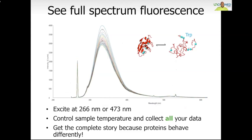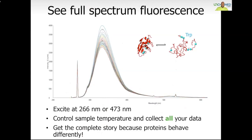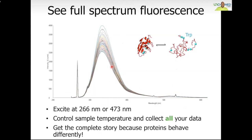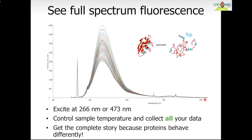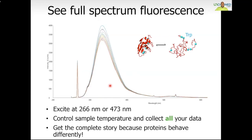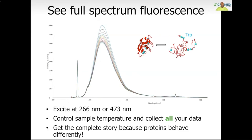Here we're viewing an overlay of the raw data, where the full collection of spectra is collected over a temperature ramp. In this particular example, the sample is excited at 266 nm, where we observe the intrinsic fluorescence spectrum at each temperature point. UNCLE captures full-spectrum fluorescence for each sample at every temperature. Each line of the graph is a fluorescence measurement starting at 15 degrees and going all the way up to 95 degrees Celsius, with a full spectrum collected from 250 up to 750 nm. You may see that as the intensity decreases, this particular sample undergoes a redshift to the right. With full-spectrum fluorescence, you have all the data at your disposal and don't have to worry about unexpected protein behavior.